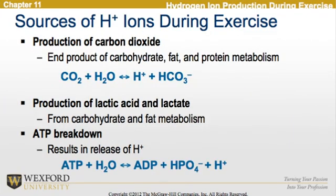Looking at the sources of hydrogen ions during exercise: one is the production of carbon dioxide, which is the end product of carbohydrate, fat, and protein metabolism. We also see that it comes from the production of lactic acid and lactate, which are the result of carbohydrate and fat metabolism. In addition, this can come from ATP breakdown, which results in the release of hydrogen ions.